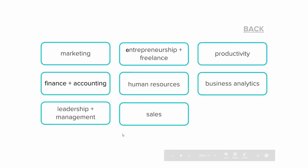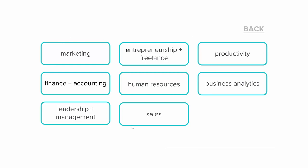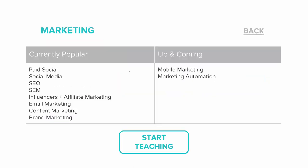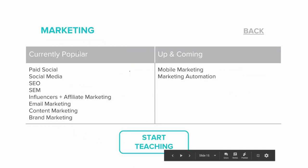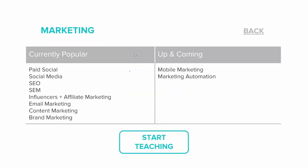For example, if your area of expertise is business, there are a number of subjects that are available that are popular and up and coming. You'll want to pay attention to these subjects and think about where your area of expertise intersects them.